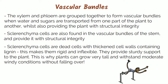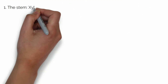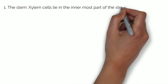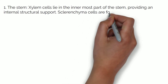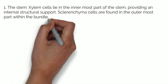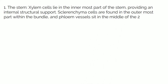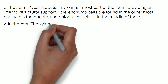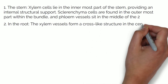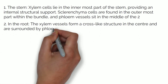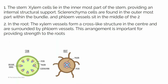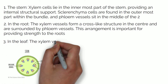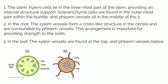This is why plants can grow very tall and withstand moderate windy conditions without falling over. The vascular bundles are arranged differently depending on which part of the plant they are found. In the stem, xylem cells lie in the innermost part providing internal structural support, sclerenchyma cells are found in the outermost part within the bundle, and the phloem vessels sit in the middle of the two cell types. In the root, the xylem vessels form a cross-like structure in the centre and are surrounded by phloem vessels, an arrangement important for providing strength as the root is pushed through the soil. In the leaf, the xylem vessels are found at the top and the phloem vessels below.